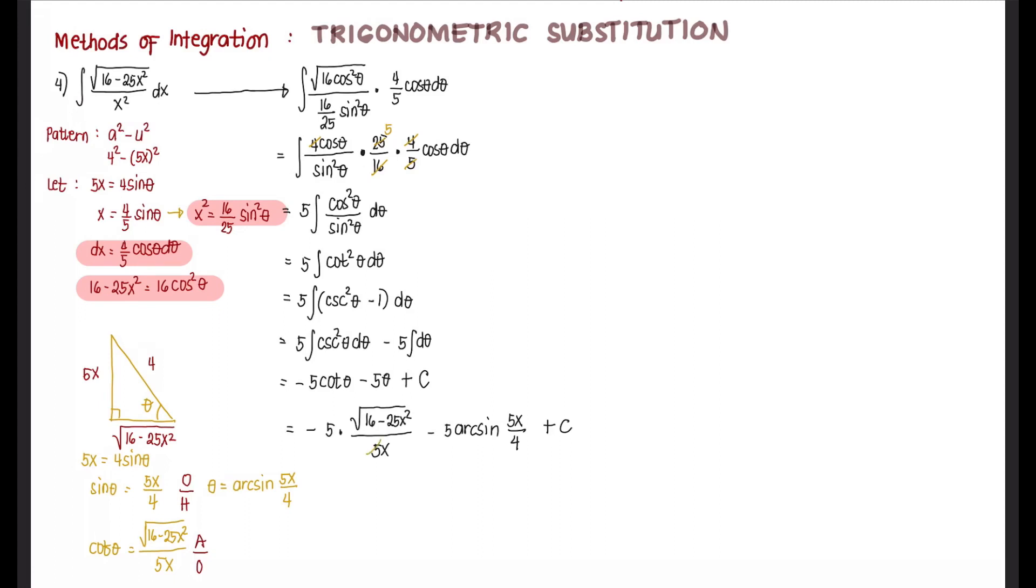We cancel out 5 here. So our answer is negative square root of 16 minus 25x squared over x minus 5 arc sine of 5x over 4 plus c. That is our answer.